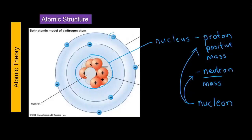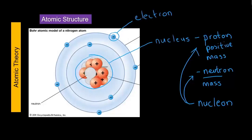Here we have the electrons depicted. They are very small, with negligible mass — incredibly small. They are negatively charged. If an atom is neutral, then there will be an equal number of positive protons and negative electrons. That is our baseline — we work from the fact that a neutral atom has equal numbers of protons and electrons.